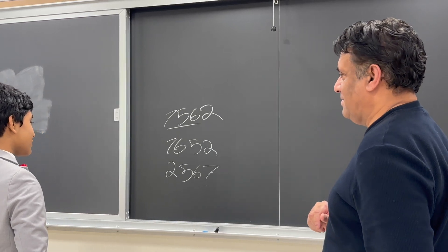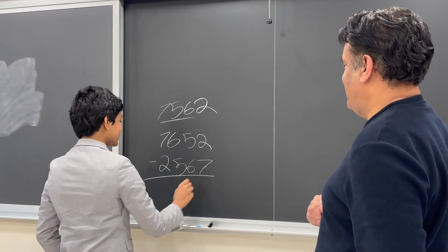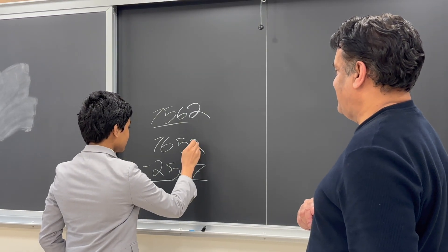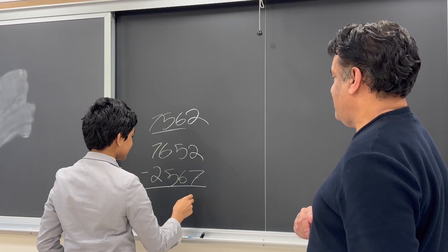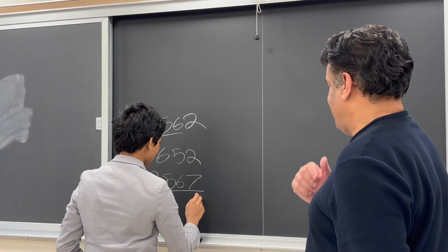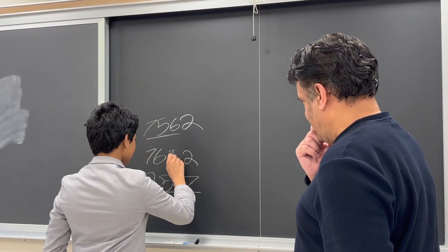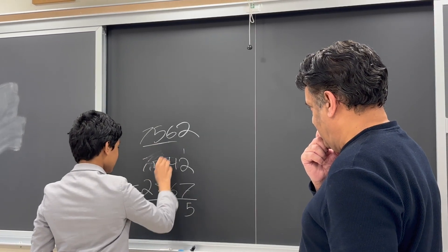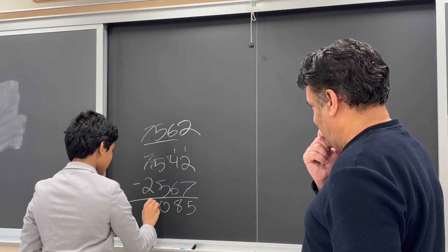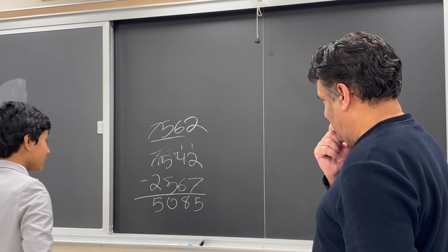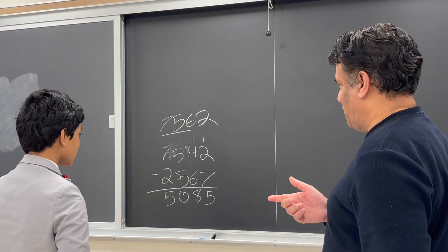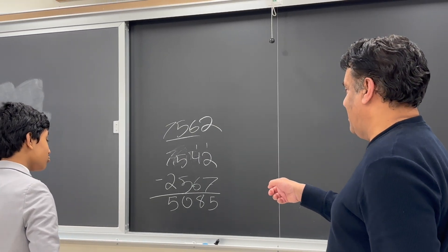Now subtract. Oh, that might take a bit. 52 minus 7. Let me just do this in the normal way. 5,085. I have to take your word for it. I don't do it this way, but okay.